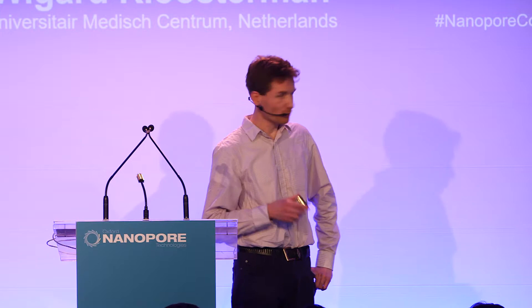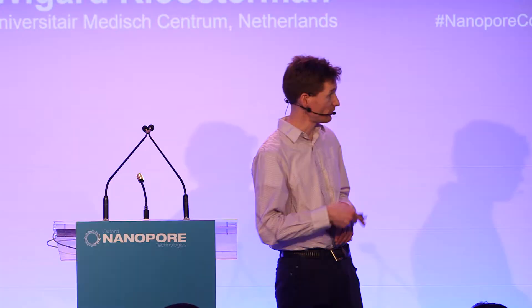We really focused on detecting structural variations from these data, and there aren't many tools out there yet to do this from such large data sets, so we thought let's build our own tool. This slide shows the basic concepts: in essence, it's a tool that detects split mappings in reads. We used LAST for the mapping of these human sequencing data, then looked at these split segments, did clustering across many reads for any position where there was a split in the mapping, and finally output a VCF file with locations where breakpoints might occur.